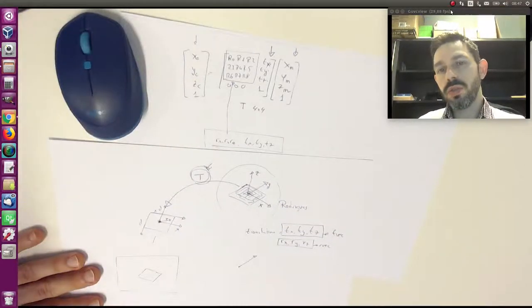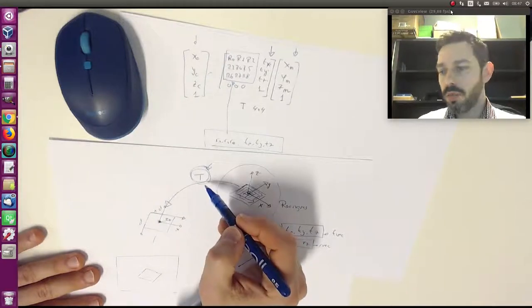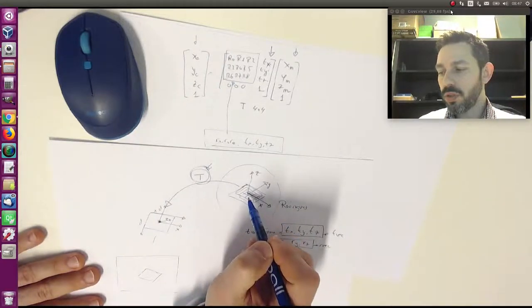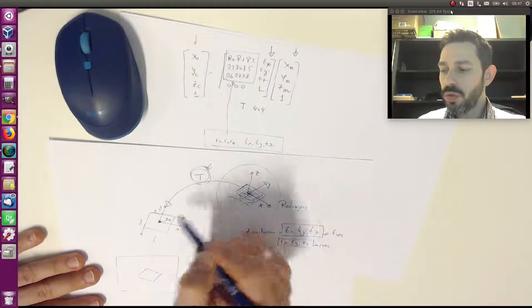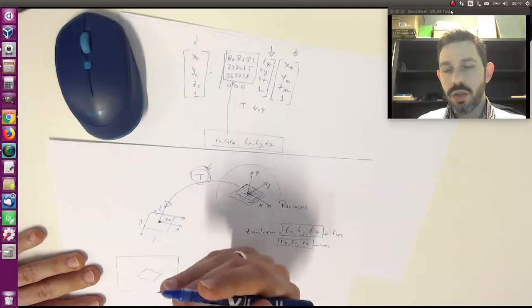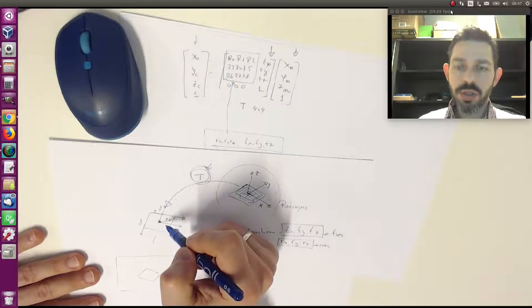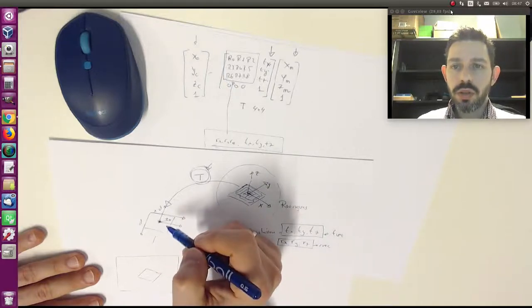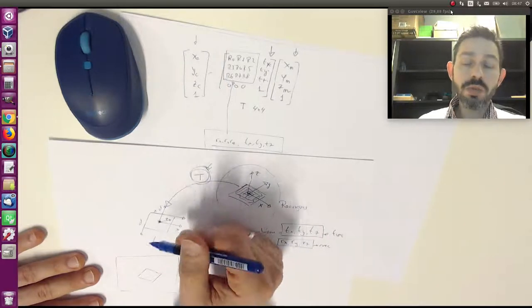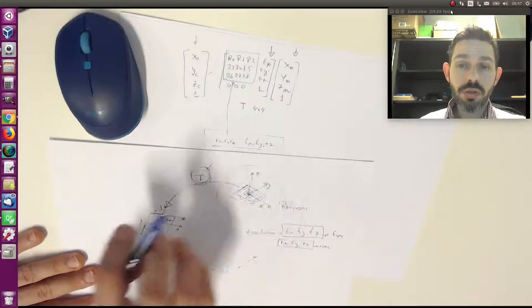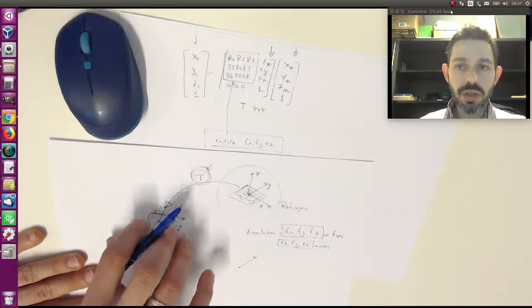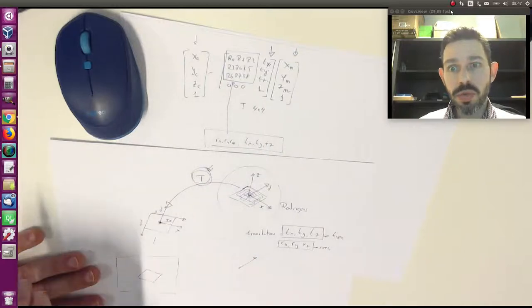Okay, once you know the transform T that moves from the marker to the camera, you can move a point from this reference system to the reference system. So once you know that, then you could know how to project a 3D point onto your image. You can know where a 3D point projects on your image.